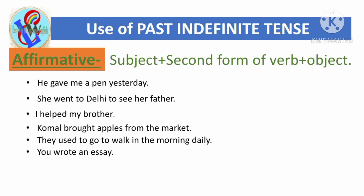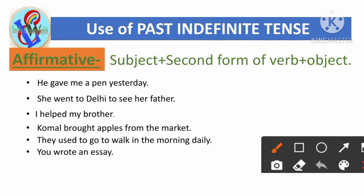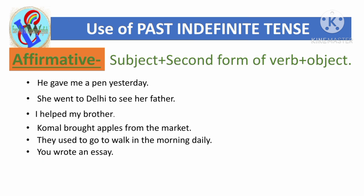'You wrote an essay.' Here 'you' is the subject, 'wrote' is the second form of 'write' — 'write' means to write and 'wrote' means wrote — and 'an essay' is the object.